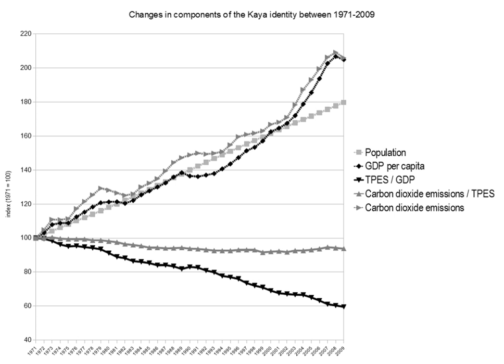Historically, growth in GHG emissions has been driven by economic development. One way of understanding trends in GHG emissions is to use the Kaya identity, which breaks down emissions growth into the effects of changes in human population, economic affluence, and technology. CO2 emissions from energy equal population times GDP per person times energy use per unit of GDP times CO2 emissions per unit of energy use. GDP per capita is used as a measure of economic affluence, while changes in technology are described by energy intensity of GDP and carbon intensity of energy.